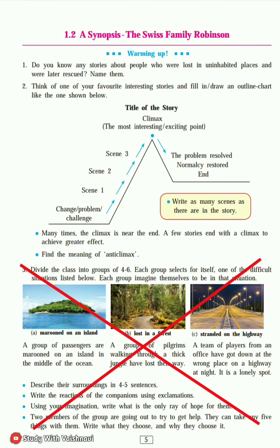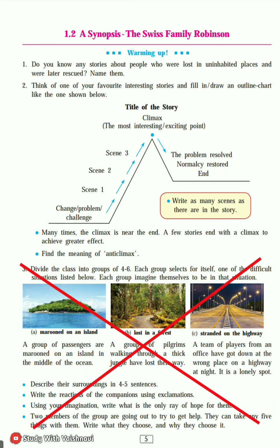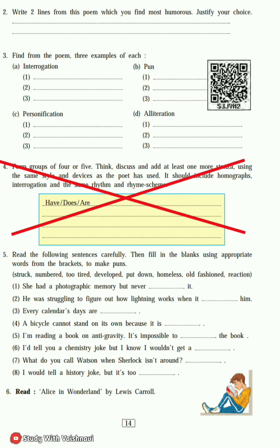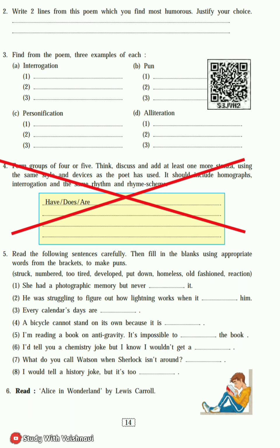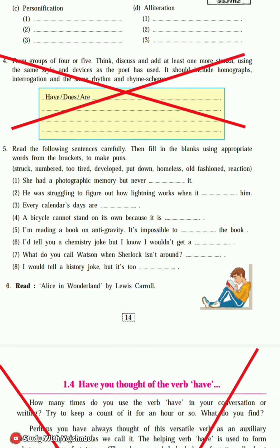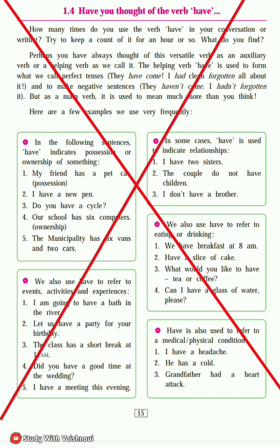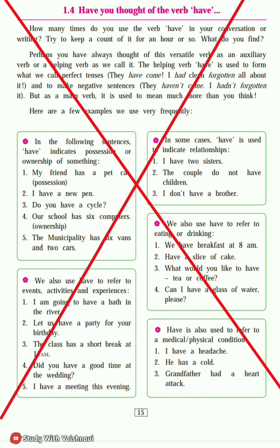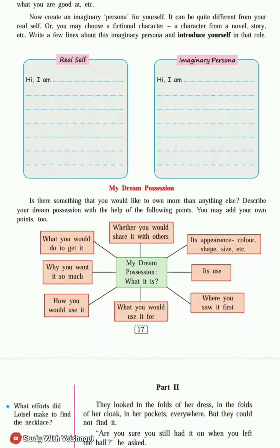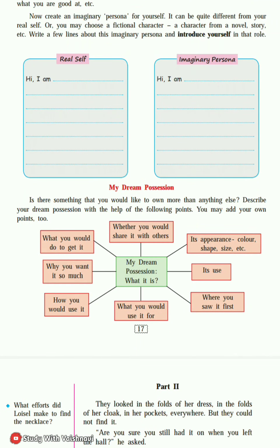1.2 - page number 5, question number 3 was reduced. After that, 1.3 - English workshop, page number 14, question number 4 was reduced. See properly: page number 14, question number 4 was reduced. After that, 1.4 - 'Have You Thought of the Verb How' - that full page number 15 was reduced from the syllabus.